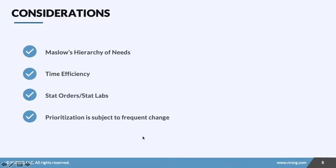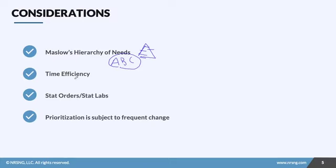When considering nursing prioritization, think about Maslow's hierarchy of needs. When caring for multiple patients, consider what patient needs must be dealt with first, and also which patients need to be seen first. Do you need to address a specific need of one patient, or should you be seeing a different patient entirely? Use ABCs to help guide you. Also consider your time — you must be very efficient as a nurse. One technique is called cluster care.